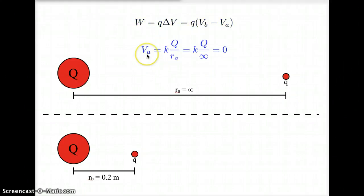We are calculating the electric potential due to the charged sphere Q. So our equation is k times Q over r. In the initial starting configuration, r is infinity. Our little charge is infinitely far away. If we divide anything by infinity, we get zero. So our initial electric potential value, V_a, is zero.